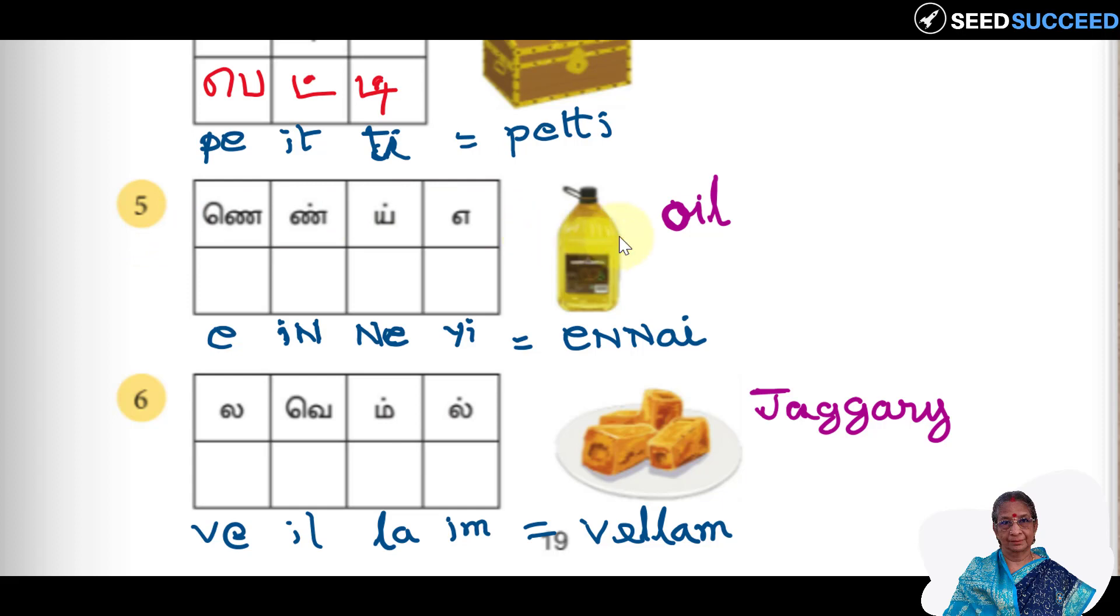Fifth word is oil. A container is here, oil container. Oil, in Tamil we will say it as ennai. Ennai, en a en en, nei ne e nei, ennai. So we are selecting the letters only from here. It is given in jumbled way, we are making it in a perfect order. First letter is a, a in, a in, ne, this is ne, nei. E, a dot. Ennai. E in nei e ennai.